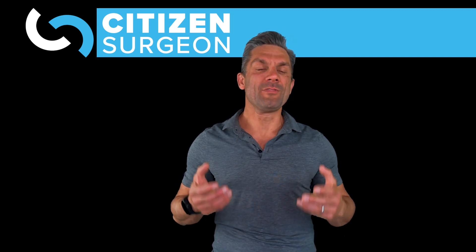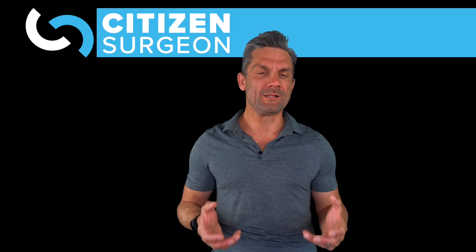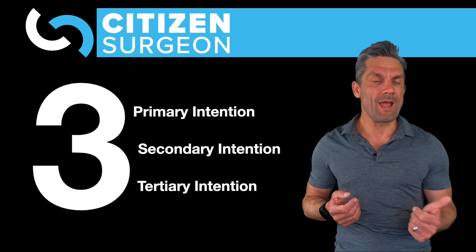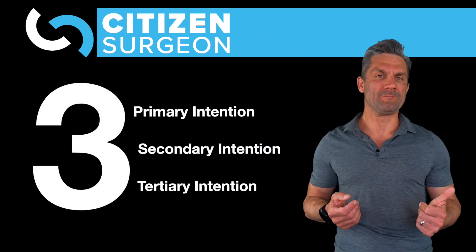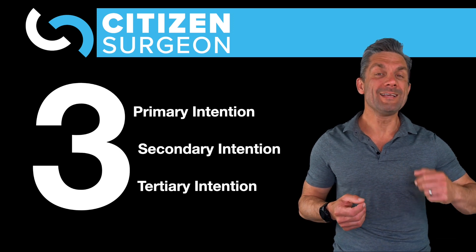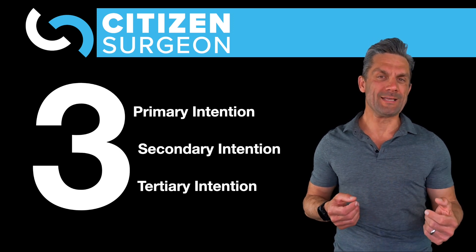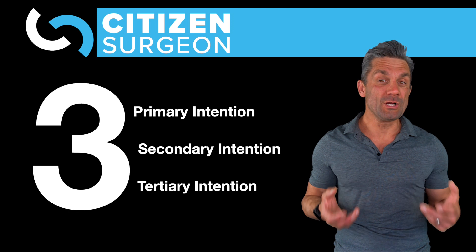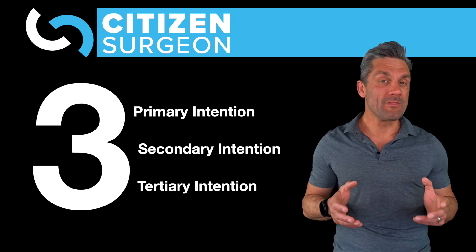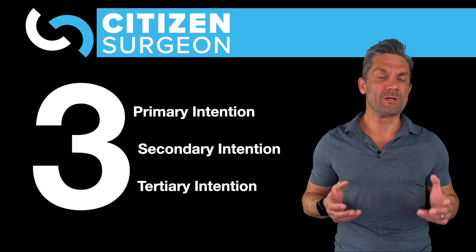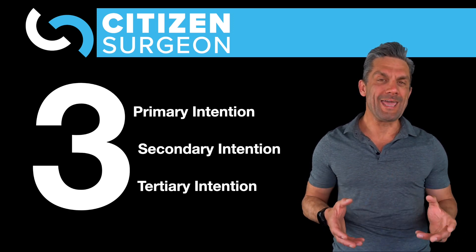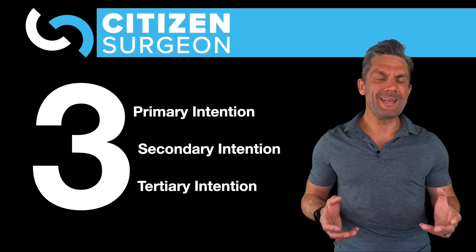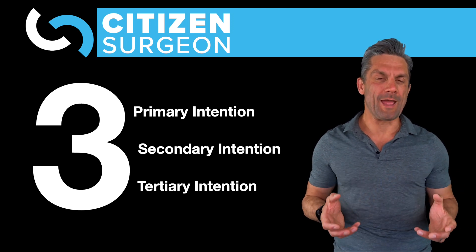What are the three ways that we can close a wound? First is by primary intention. Second is by secondary intention. And third is by tertiary intention — another word for tertiary intention is delayed primary closure. Let's get into primary closure.